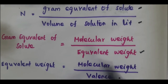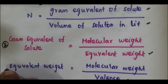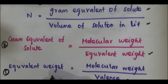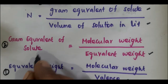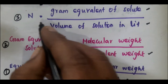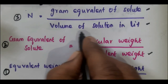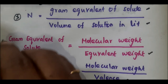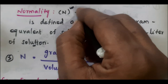To calculate normality, you have to follow three steps. First, calculate the equivalent weight of the solute. Second, calculate the gram equivalents of the solute. Third, calculate normality by substituting the gram equivalents of solute and volume of solution in liters. If you follow these three steps, it is very easy to calculate the normality of the solution.